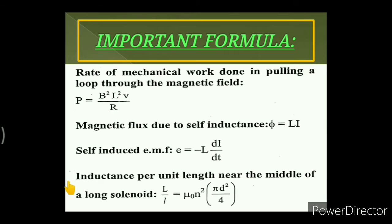The inductance per unit length near the middle of a long solenoid is given as L/l = μ₀n²(πd²/4), where d is the diameter of the solenoid, n is the number of turns per unit length, and L/l is the inductance per unit length.